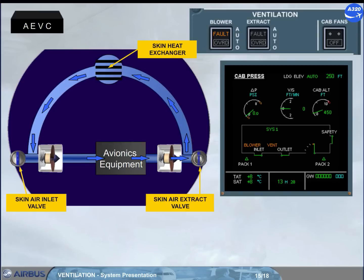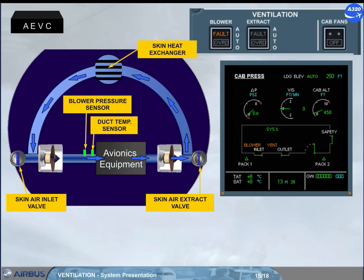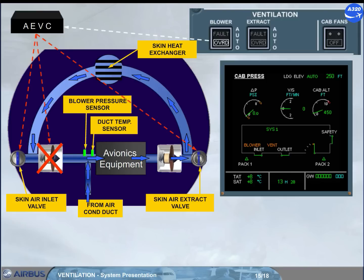A fault light comes on the related push button switch in case of a blower flow problem or a duct overheat. Setting that push button switch to override allows the ventilation system to be reconfigured by activating the closed circuit configuration, by stopping the blower fan, and by adding air from the air conditioning duct through an air conditioning inlet valve.